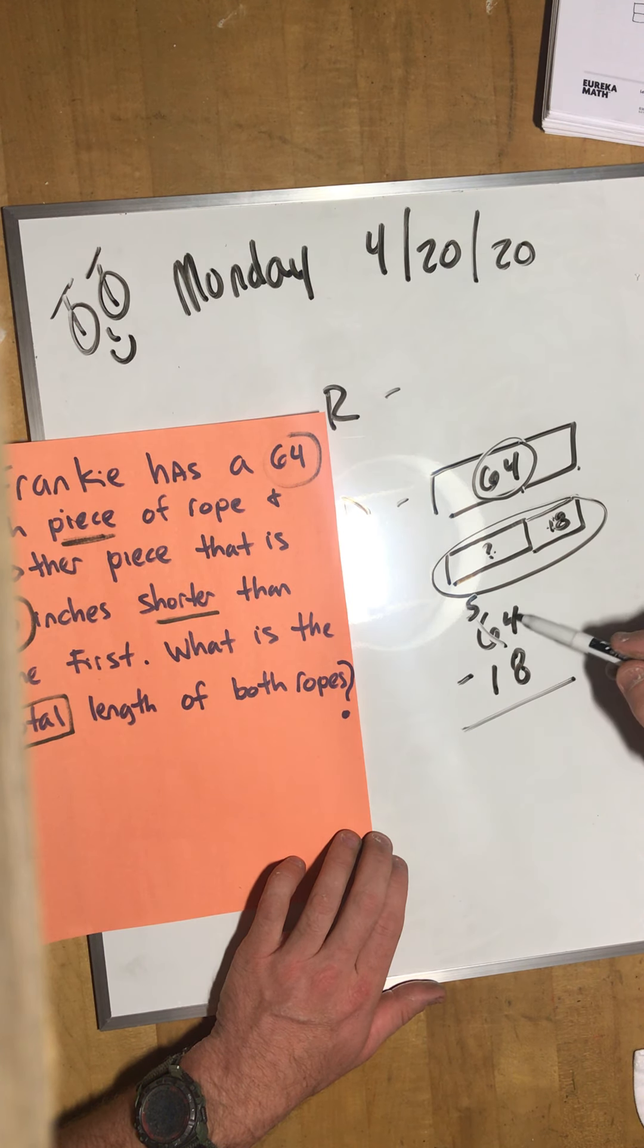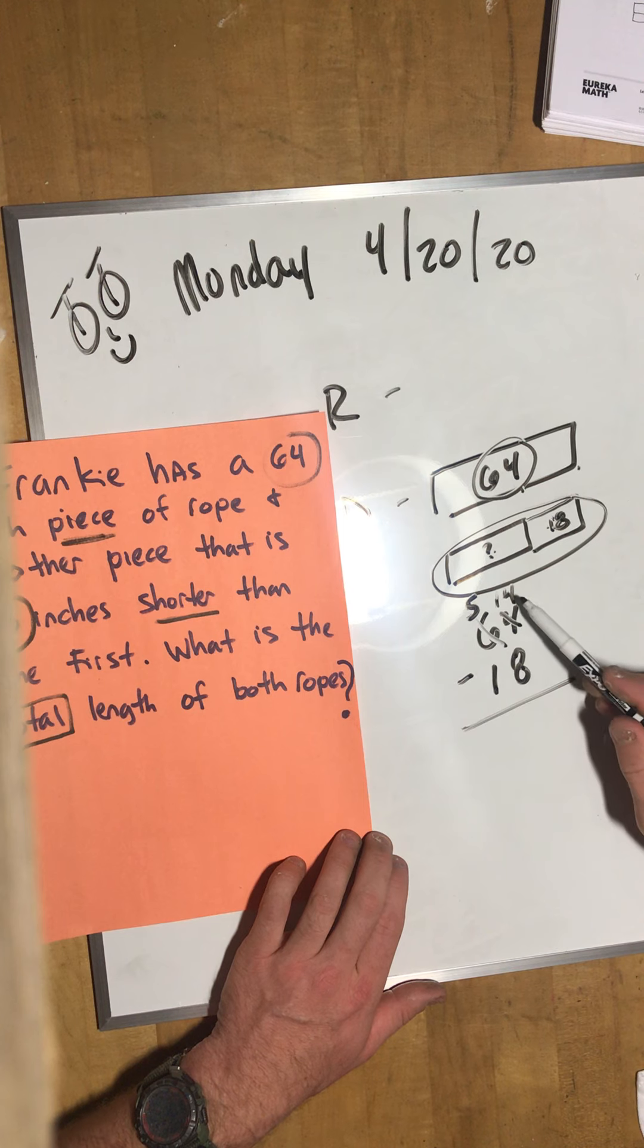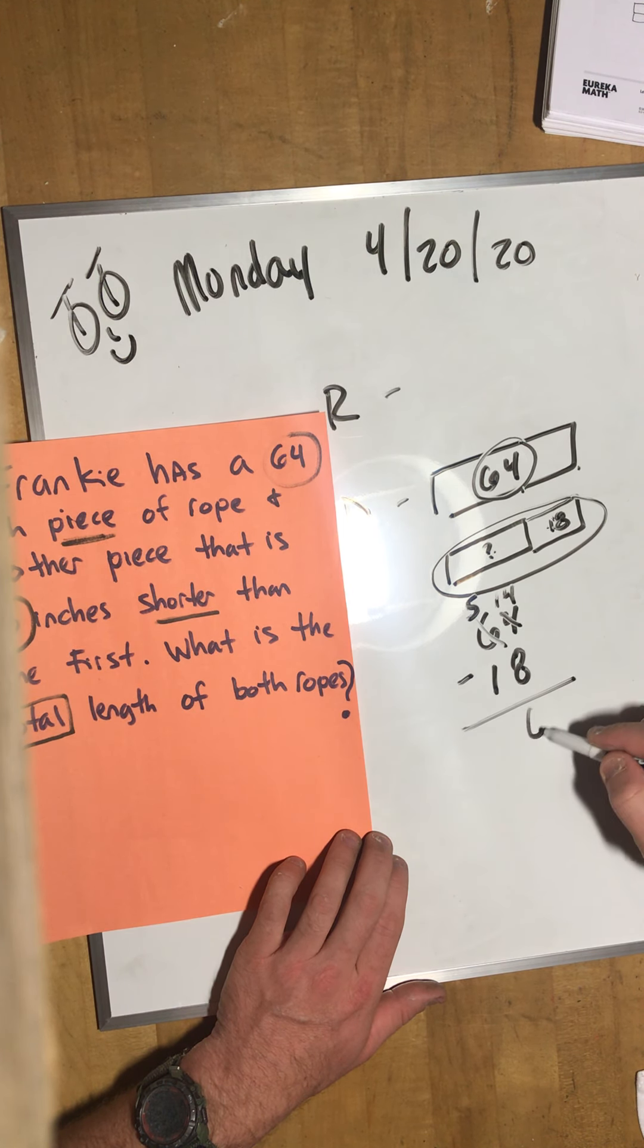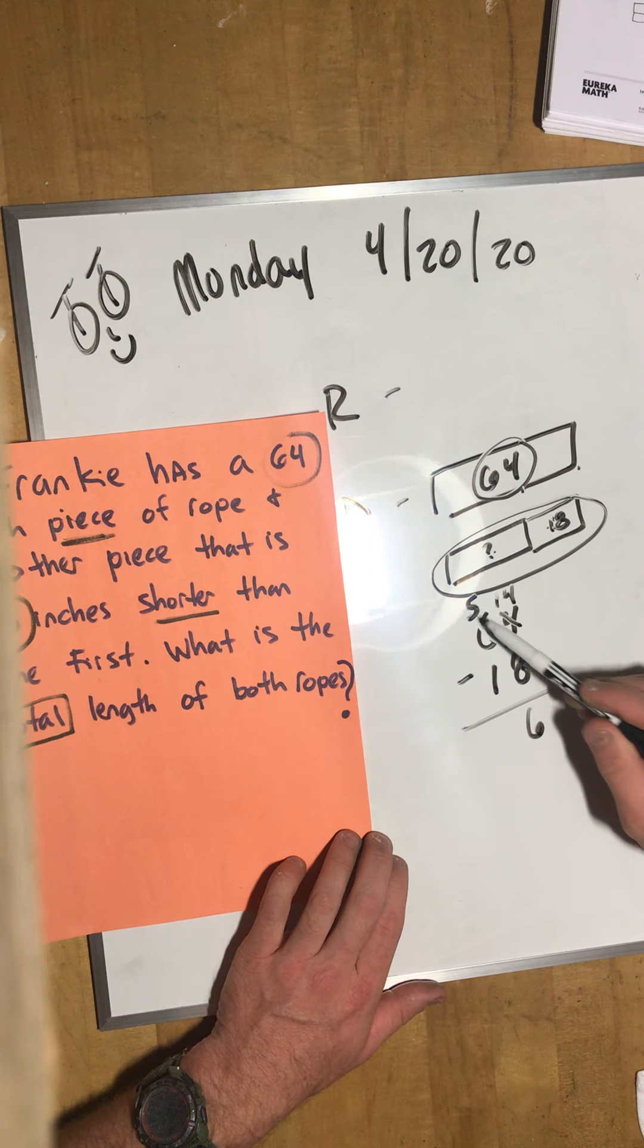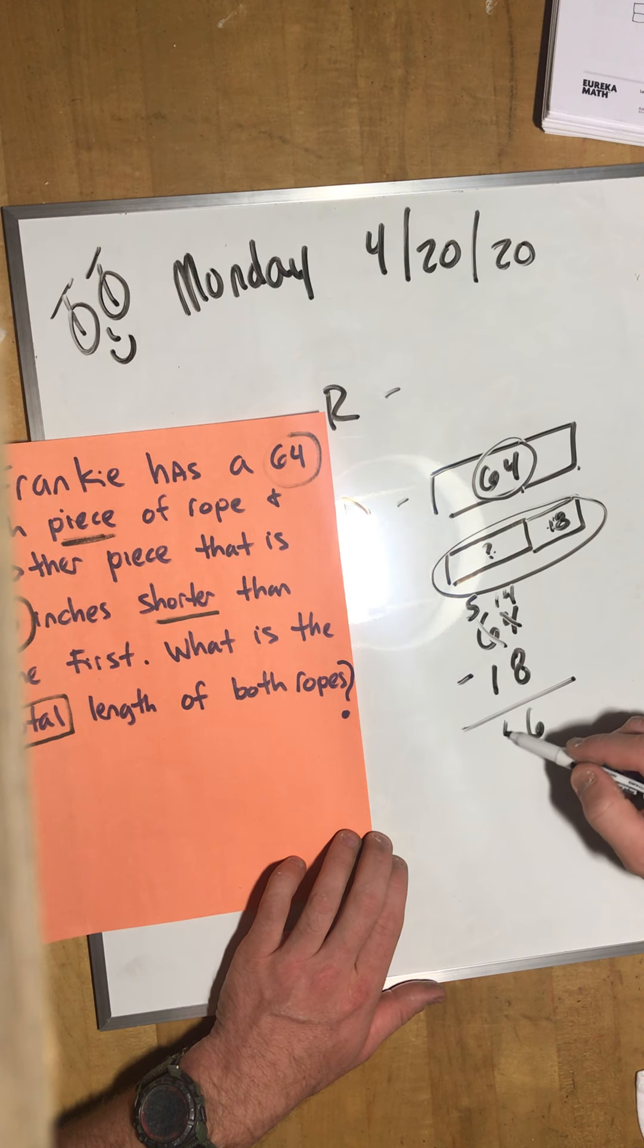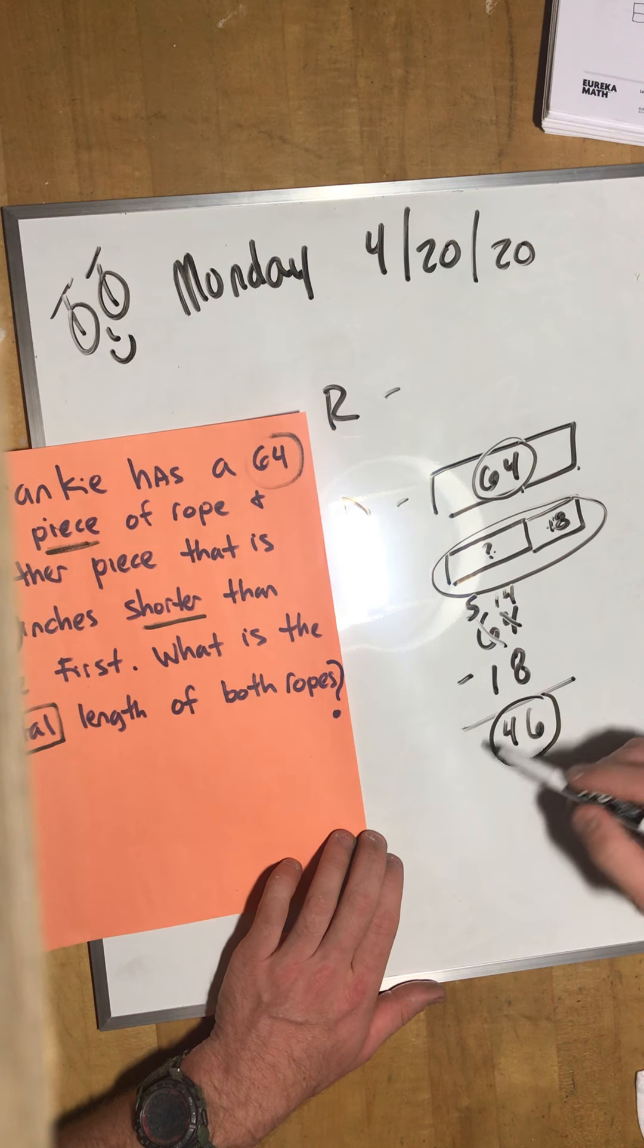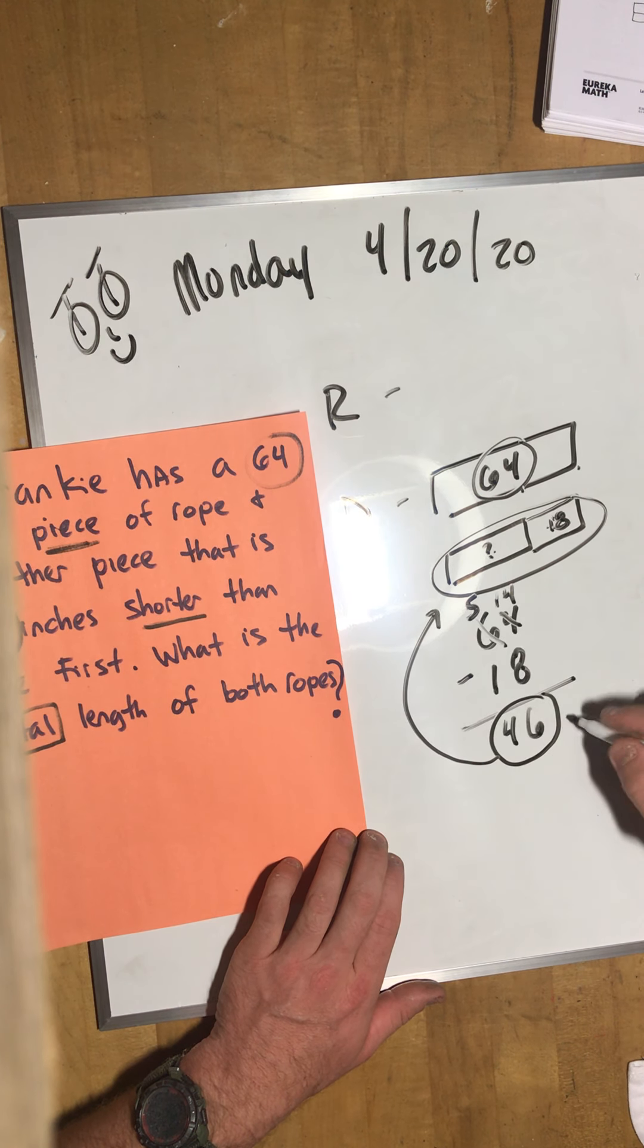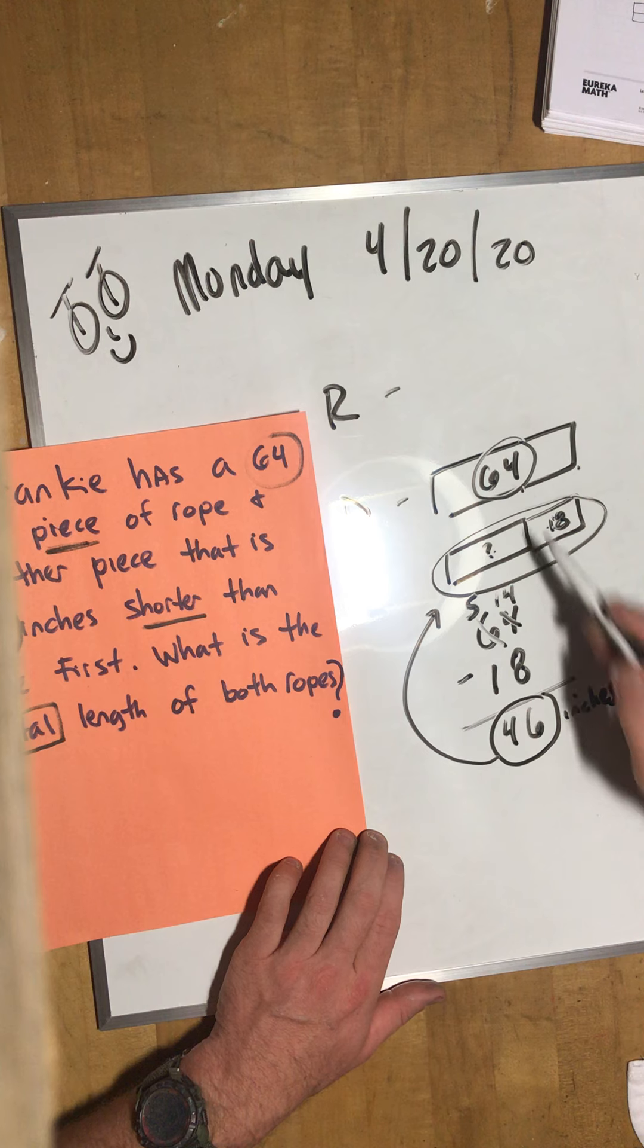Can I take away 8 ones from 4 ones? No I can't. So I have to go next door and borrow. Unbundle a 10, move it over and now we have 14 ones. 14 minus 8 is 6. 5 minus 1 is 4.